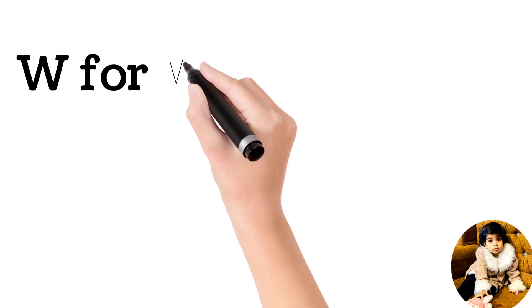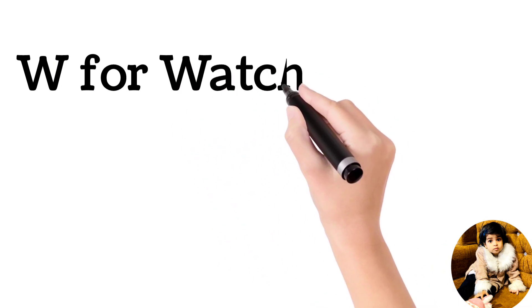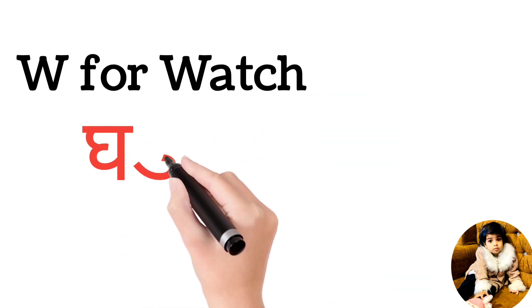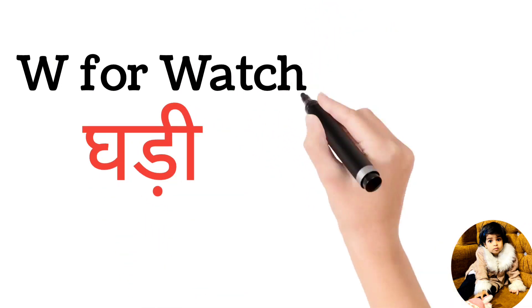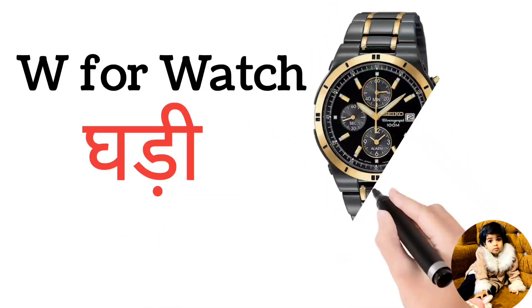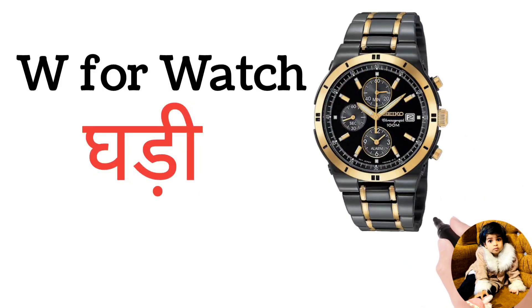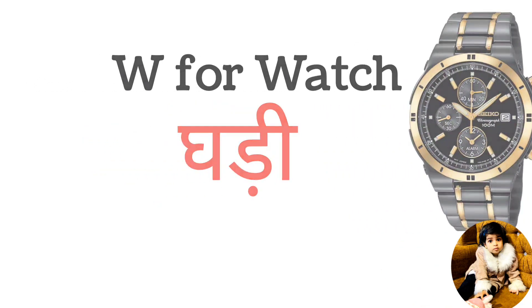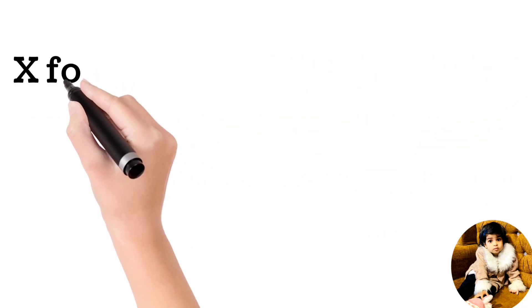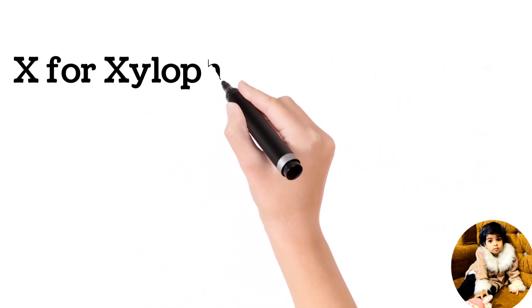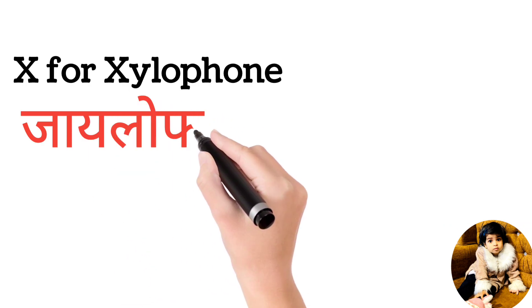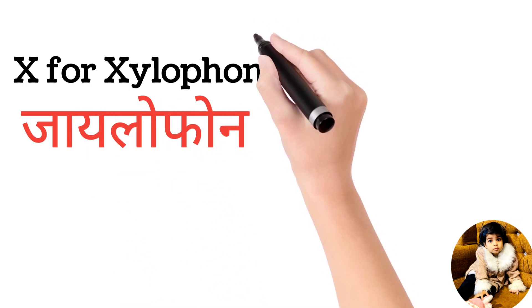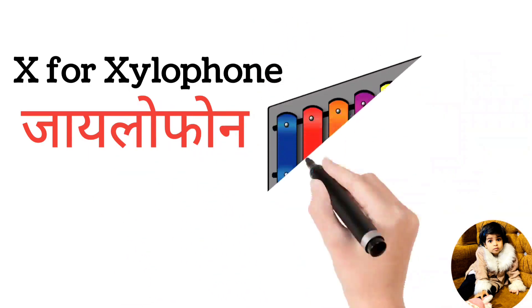W for watch, watch means ghari. X for xylophone, xylophone means xylophone.